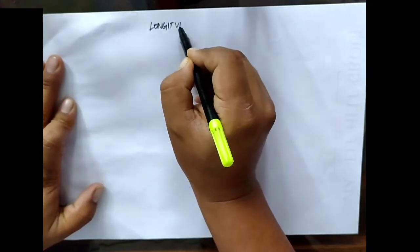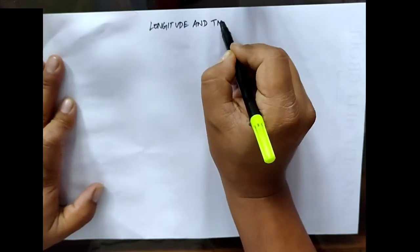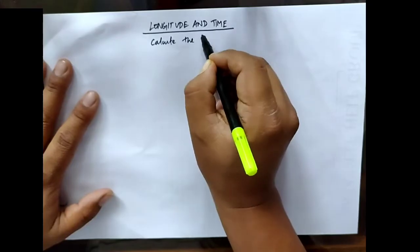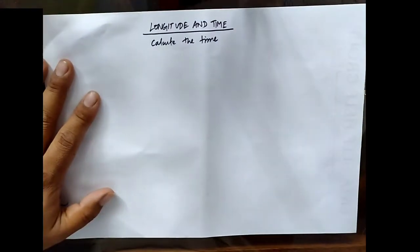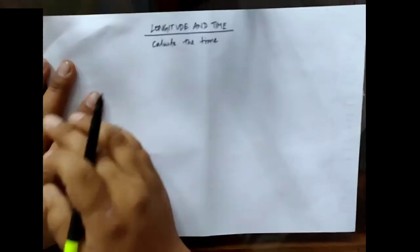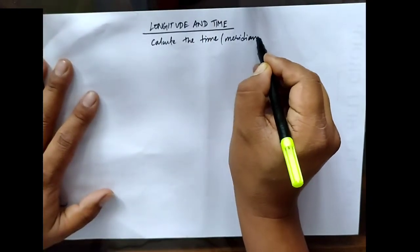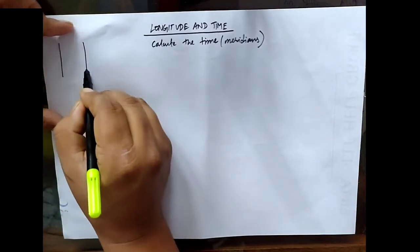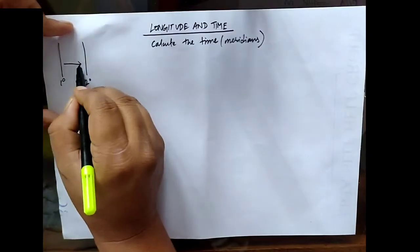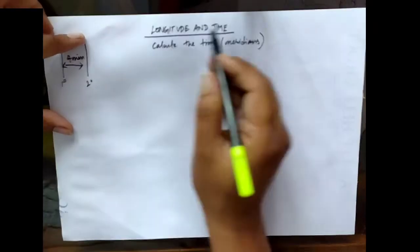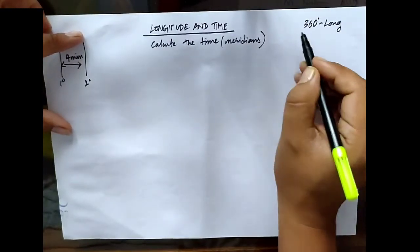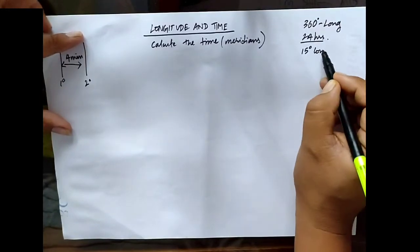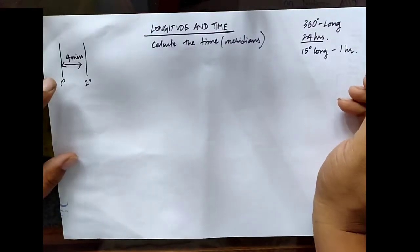Hello students. Today we are going to study longitude and time, and I'm going to teach you how to calculate time with the help of meridians. To cover one degree interval of longitude, the time taken is four minutes. To cover 360 longitudes, the time taken will be 24 hours. So 15 degrees of longitude will be covered in one hour, giving us 24 time zones.